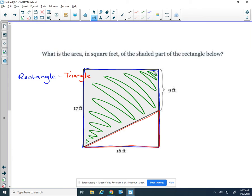So the area of the rectangle is base 16 and height 17, so we have 16 times 17. For my triangle, I know it's one half base times height. So I'm going to write down one half. The base of this triangle is 16.